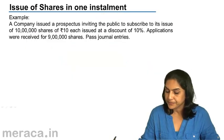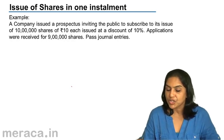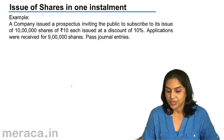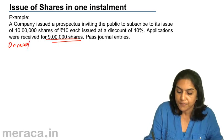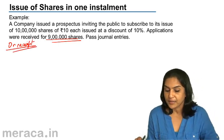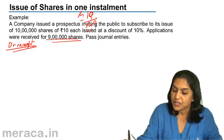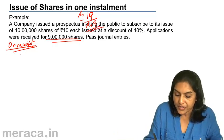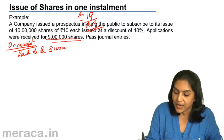Let us take an example. A company issued a prospectus inviting the public to subscribe to its issue of 10 lakh shares of rupees 10 each, issued at a discount of 10%. Applications were received for 9 lakh shares. On receipt, 9 lakh shares at issue price of rupees 9 each — bank account debit: 9 lakh into 9 equals 81 lakh rupees, to share application and allotment.